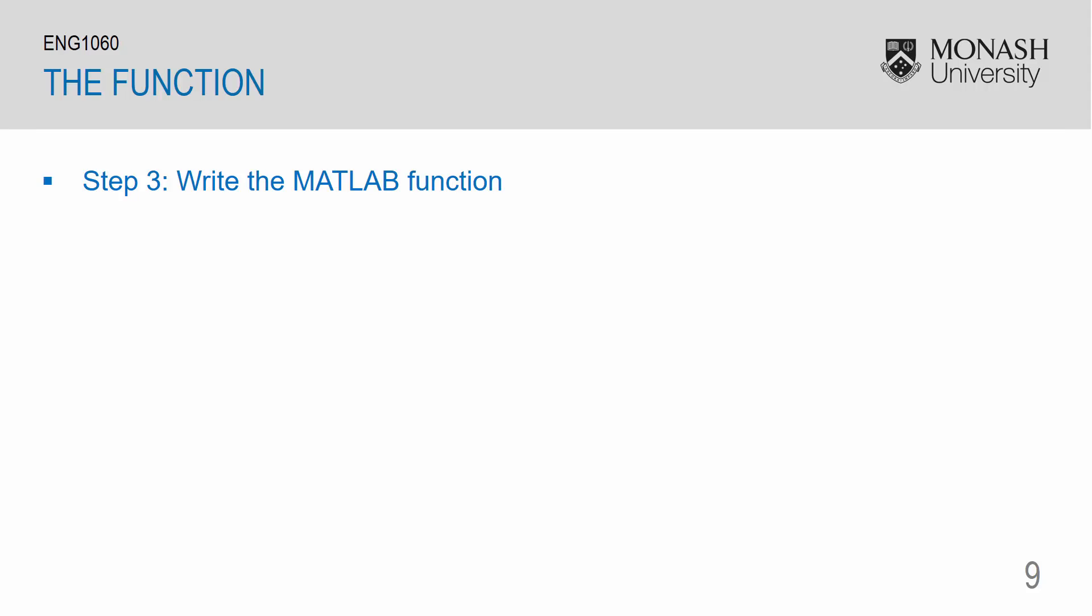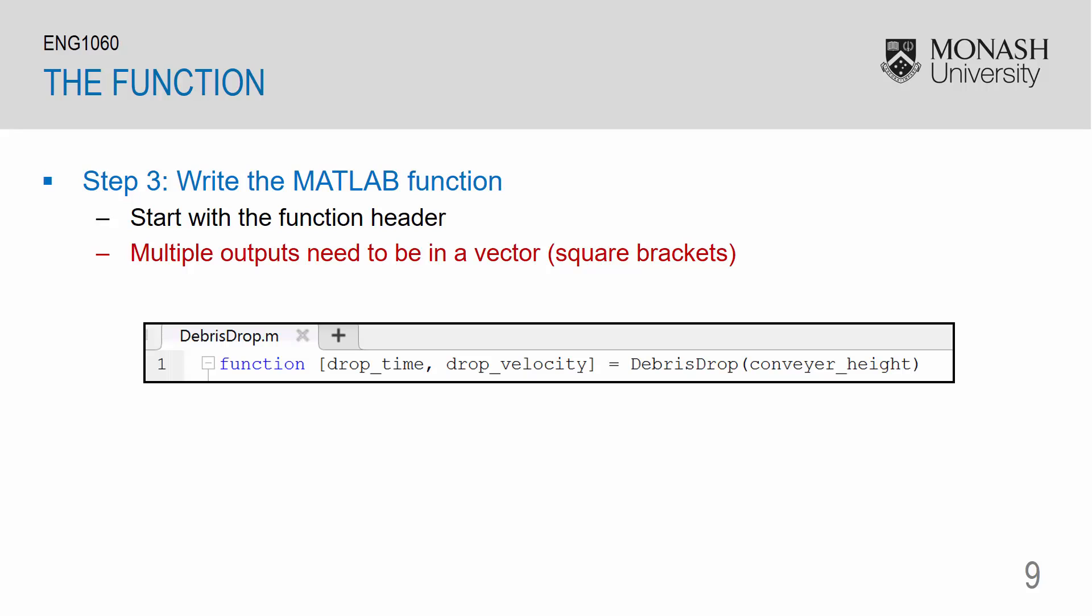The third step then is to create the MATLAB function. We can do so by starting off with the function header. Recall that the function header starts off with the word function. Since we have two outputs, we need to encase it in square brackets to denote that it is a vector. My first output is drop_time. And my second output is drop_velocity. Next, we have our function name, which is DebrisDrop. And finally, we have our input, which is conveyor_height.